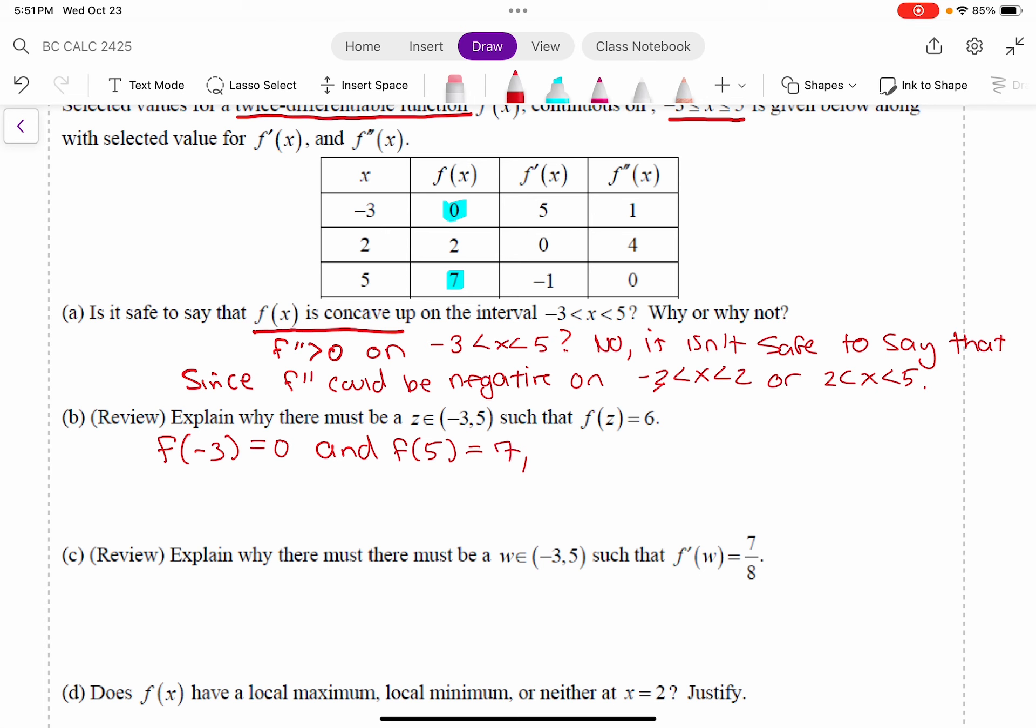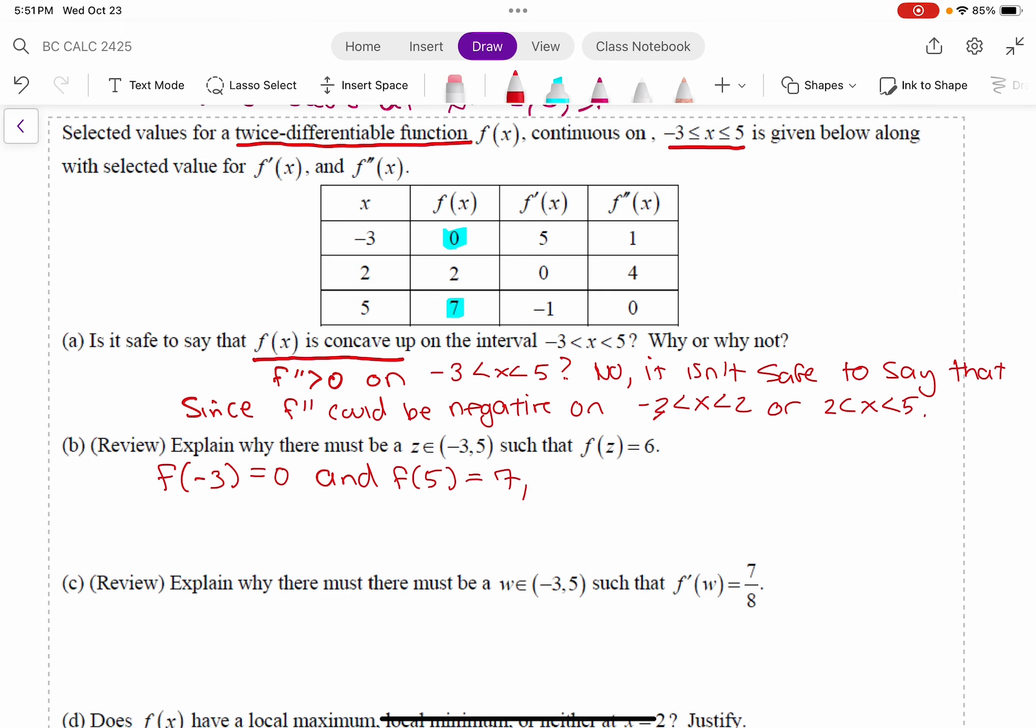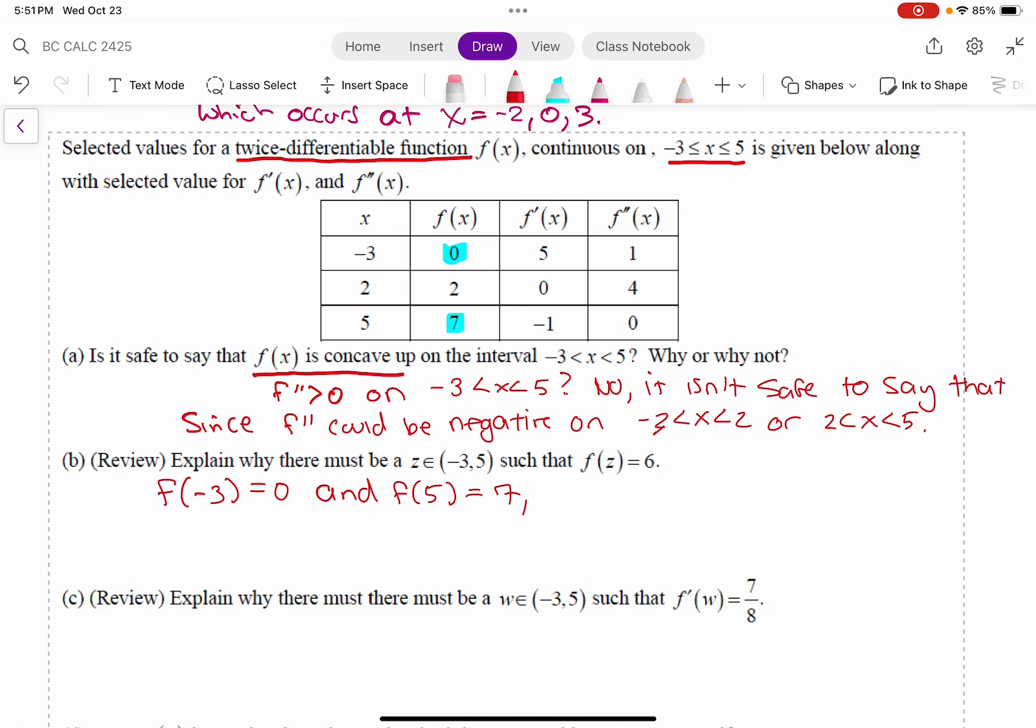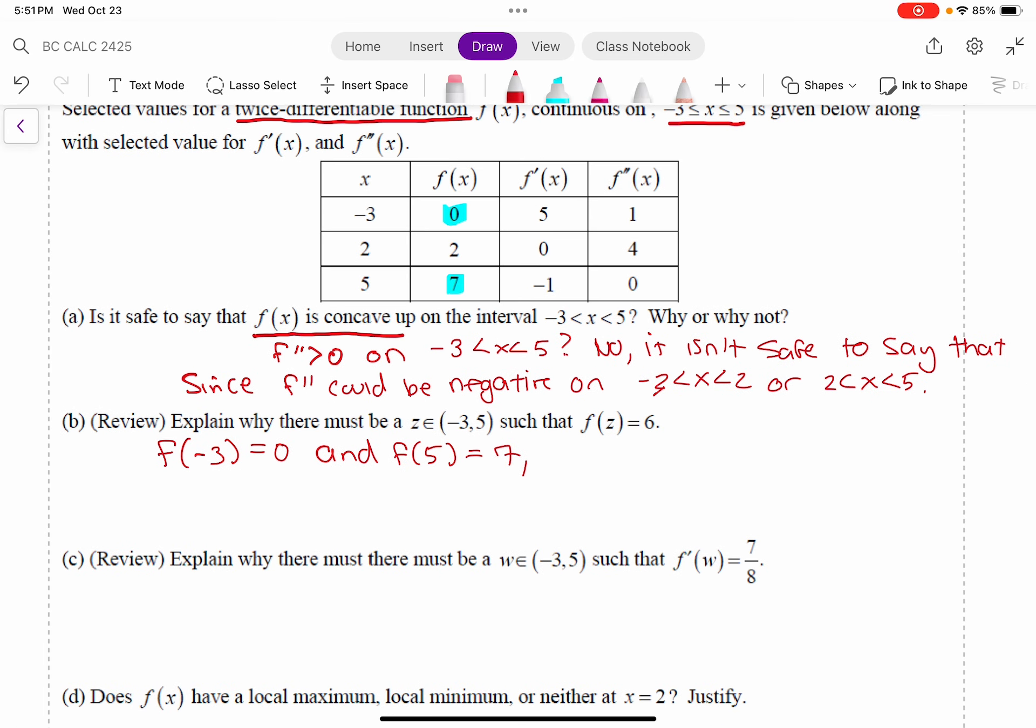Because if we're not, we can't make any conclusion, but this question says that we, I mean it asserts that it's true. So yeah, f is continuous on negative 3 to 5, so this is the intermediate value theorem.